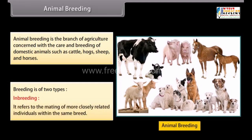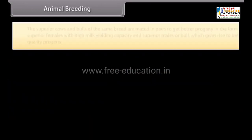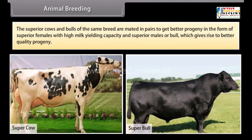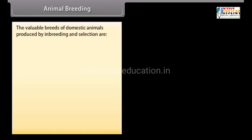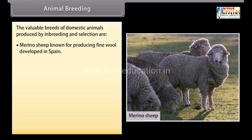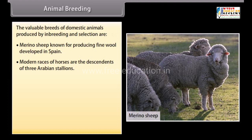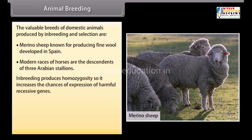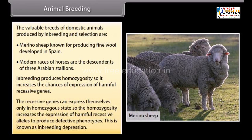Inbreeding refers to the mating of more closely related individuals within the same breed. Superior cows and bulls of the same breed are mated in pairs to get better progeny — superior females with high milk-yielding capacity and superior males. Valuable breeds produced by inbreeding include Merino sheep, known for fine wool developed in Spain, and modern races of horses descended from three Arabian stallions. Inbreeding produces homozygosity, increasing the chance of expression of harmful recessive genes, known as inbreeding depression.